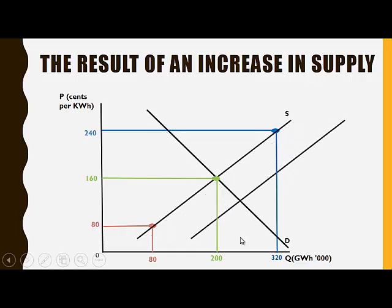Now there's an increase in supply to S-accent. At the original equilibrium price of 160, there will now be a supply of 300 due to the increase in supply, but the demand remains at 200. Therefore, there is now excess supply.